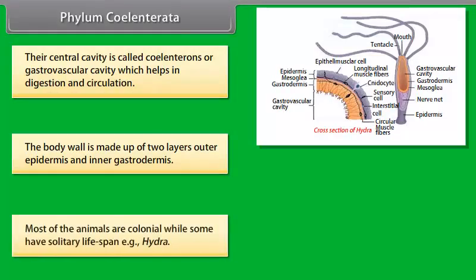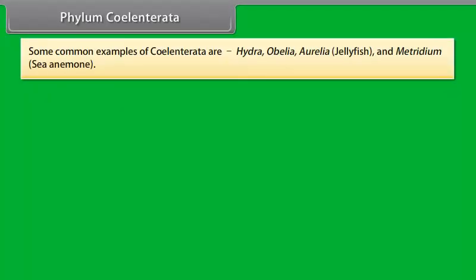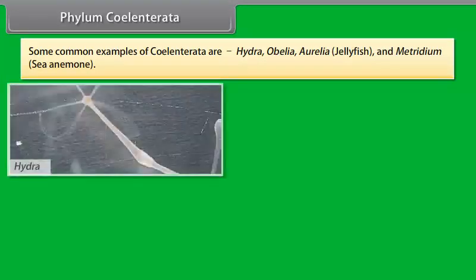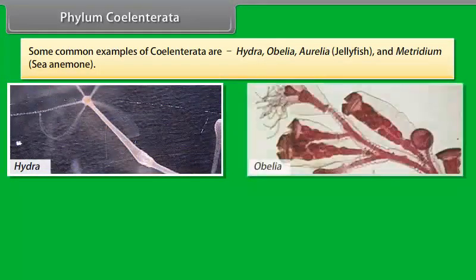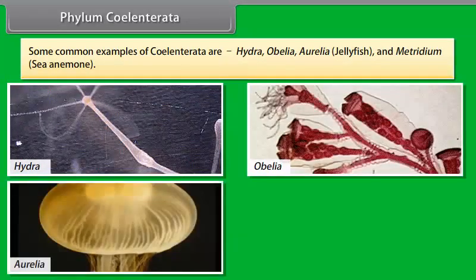Most of the animals are colonial while some have a solitary lifestyle, that is Hydra. Some common examples of Coelentrata are Hydra, Obelia, Aurelia, Jellyfish, and Metridium, sea anemone.